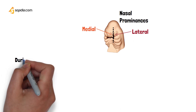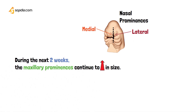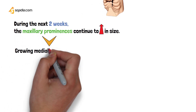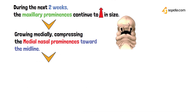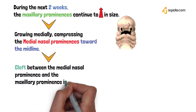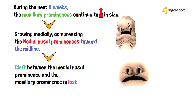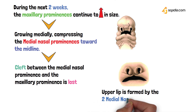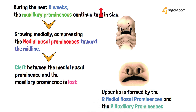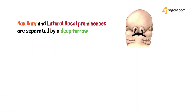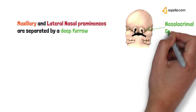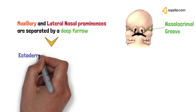During the next two weeks, the maxillary prominences continue to increase in size. Eventually these maxillary prominences grow medially — towards each other — and compress the medial nasal prominences towards the midline. The cleft present between the medial nasal prominence and the maxillary prominence is lost, leading to the formation of the upper lip. The maxillary and lateral nasal prominences are separated by a deep furrow known as the nasal lacrimal groove.